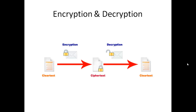What is encryption? Encryption is a process of converting plain text into unintelligible format. Look at the picture. The unintelligible format is called ciphertext.